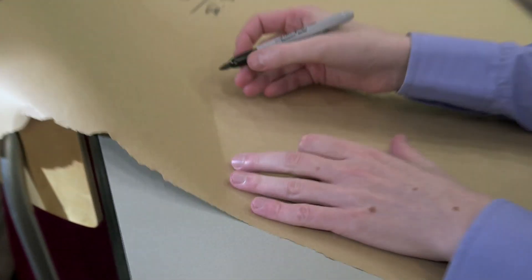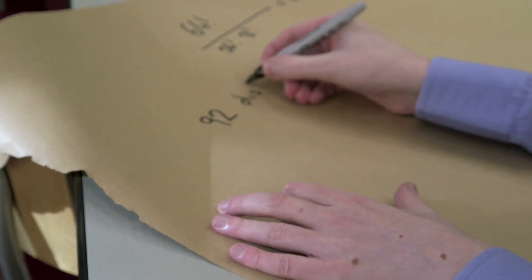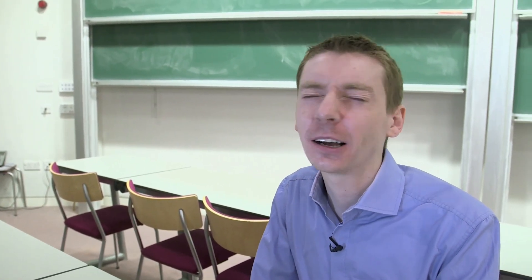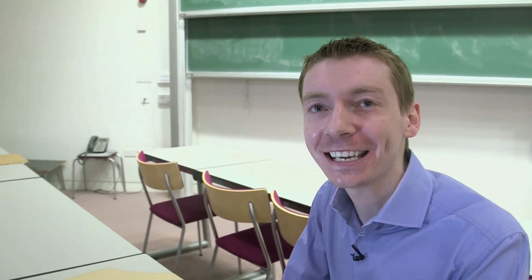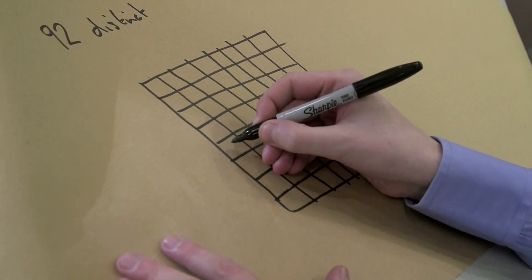It is in fact only a small fraction of this 4 billion. There are 92 distinct solutions. 92 out of 4 billion as a percentage is a tiny, unbelievably tiny.